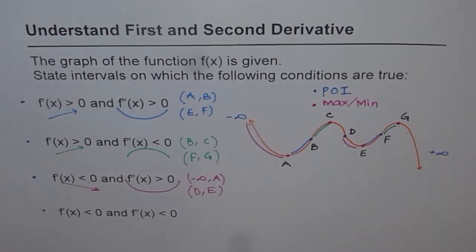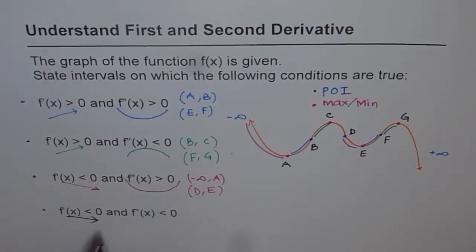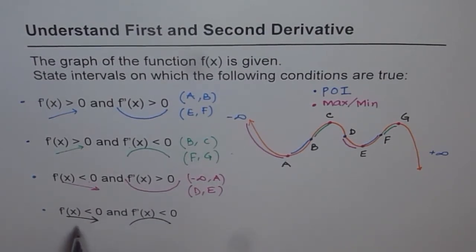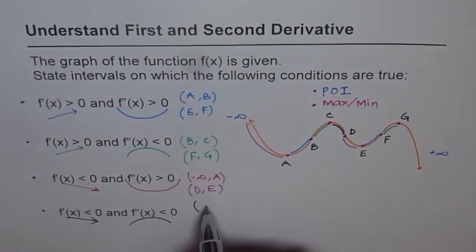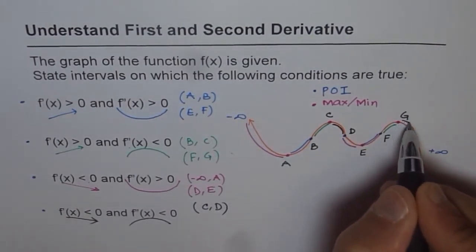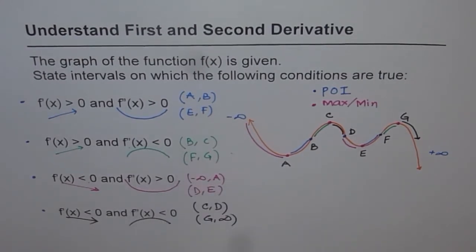For the last condition, f'(x) is less than zero — meaning the graph is decreasing — and f''(x) is also negative, meaning concave down. So the graph has to be coming downward and concave down. That gives us the interval C to D. And similarly, something going downward and concave down at the end gives us G to positive infinity. So that is how we read our graph for all four conditions.